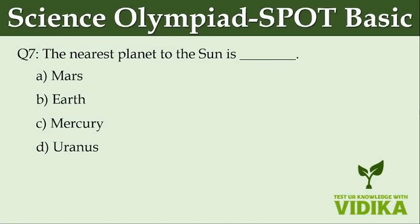The nearest planet to the Sun is dash. Option A: Mars. Option B: Earth. Option C: Mercury. Option D: Uranus.